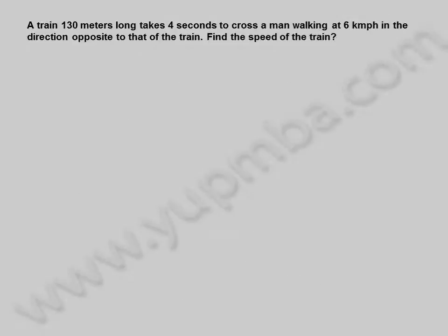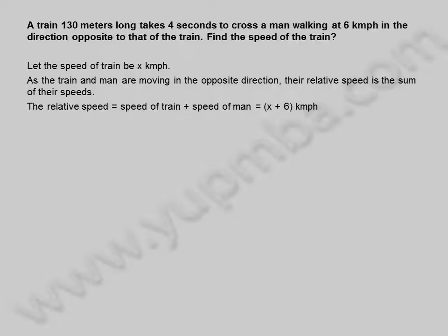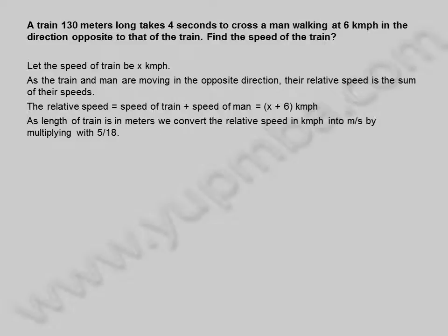Let us see another example. A train 130 meters long takes 4 seconds to cross a man walking at 6 kilometers per hour in the direction opposite to that of the train. Find the speed of the train. Let the speed of train be x kilometers per hour. As the train and man are moving in the opposite direction, their relative speed is the sum of their speeds, equal to x plus 6 kilometers per hour. Converting to meters per second by multiplying with 5 by 18, the relative speed is x plus 6 into 5 divided by 18 meters per second.